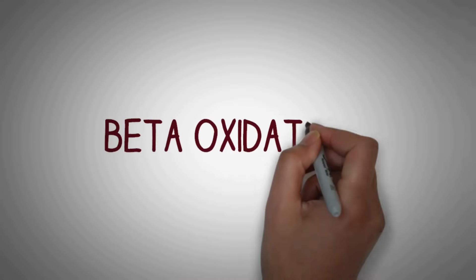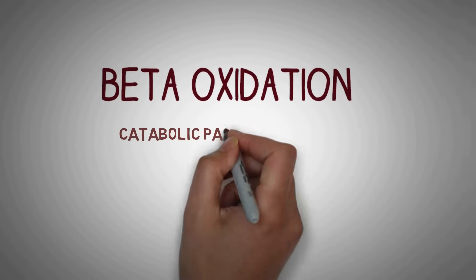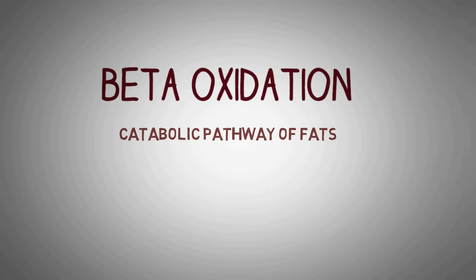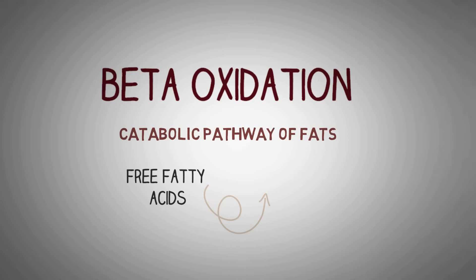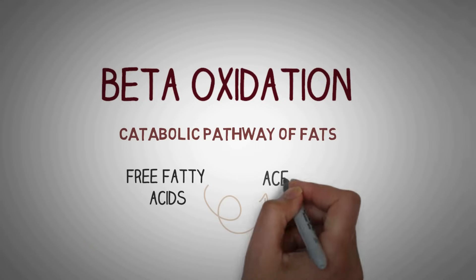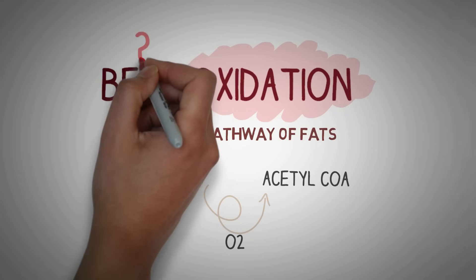In this video we will study about the beta oxidation of fatty acids. Beta oxidation is a catabolic pathway of fats in which free fatty acids are converted to acetyl-CoA. Since this process involves oxygen in one form or another, it is known as oxidation. But why is this process called beta oxidation?